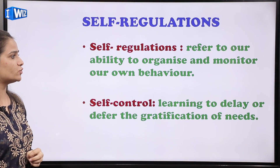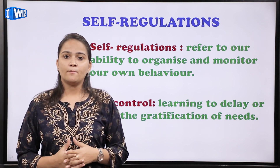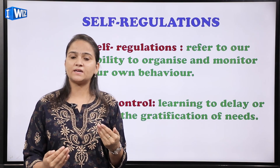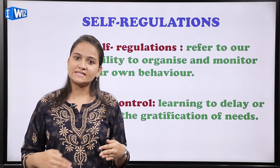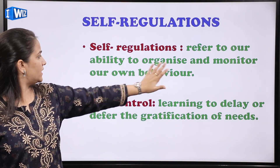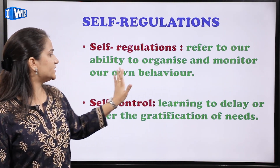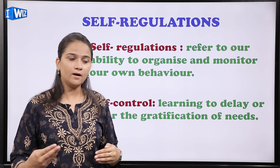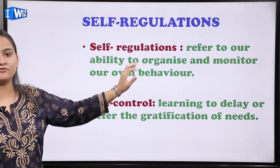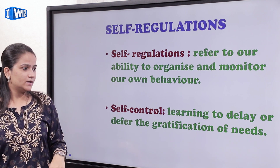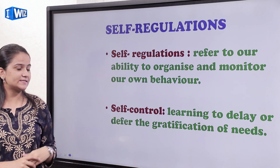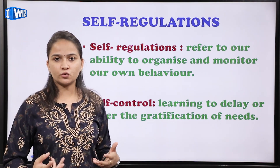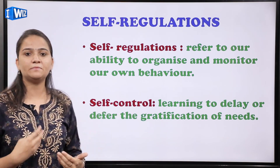Next topic है self-regulation। Self-regulation refers to our ability to organize and monitor our own behavior। यानि आपकी खुद की क्षमता है अपने behavior को सही करने की। Organize यानि अपने behavior को सही करना, और monitor यानि उसे समय के साथ बदलते रहना या judge करना — यही है self-regulation। Next term आती है self-control — learning to delay or defer the gratification of needs। इनसान का अपनी needs और desires पर जो control होता है, उसे हम self-control कहते हैं।